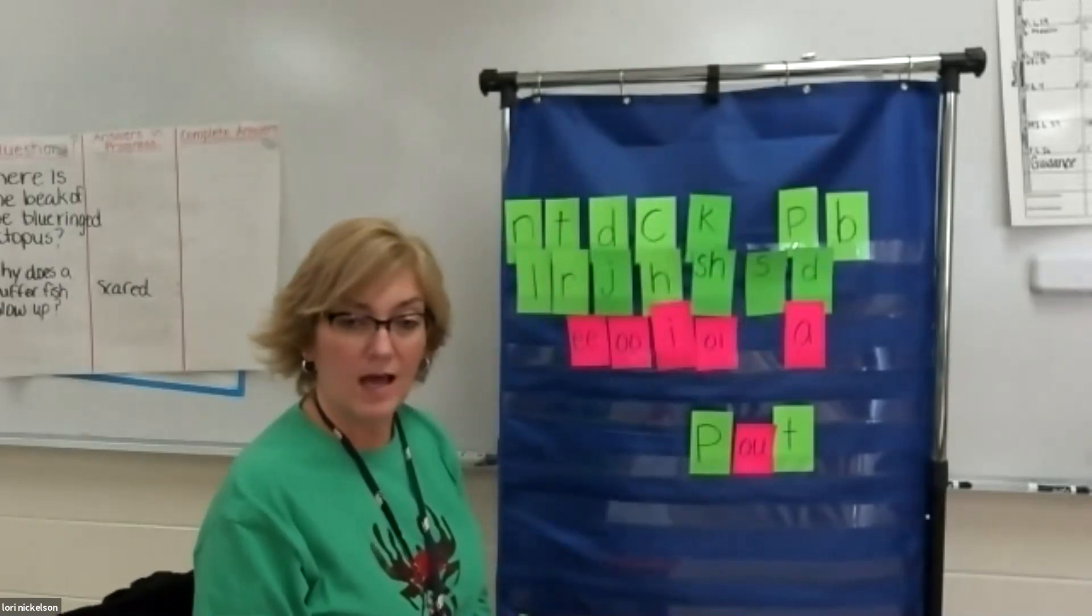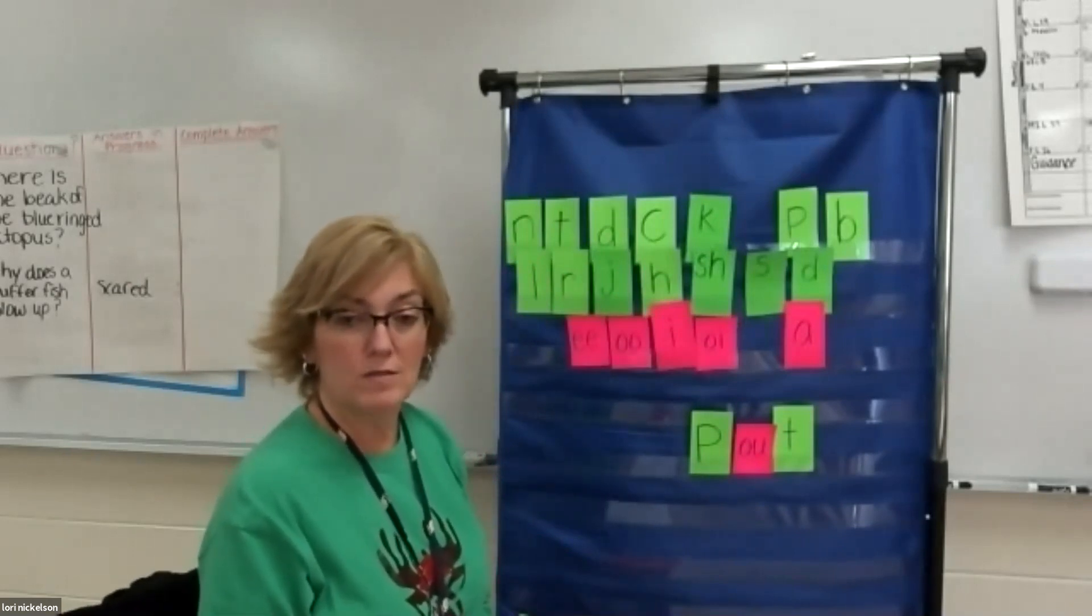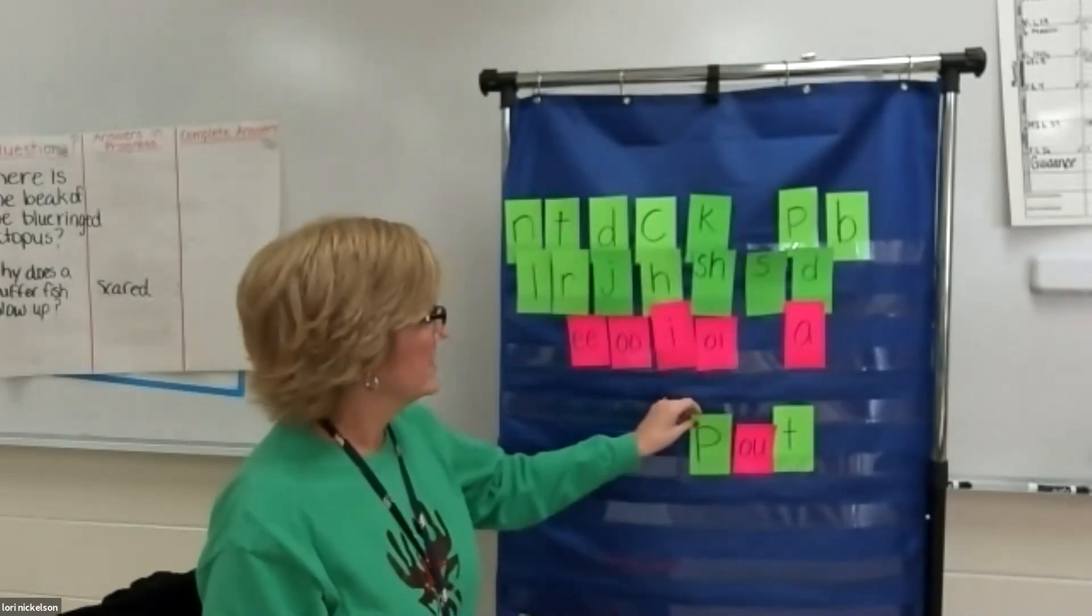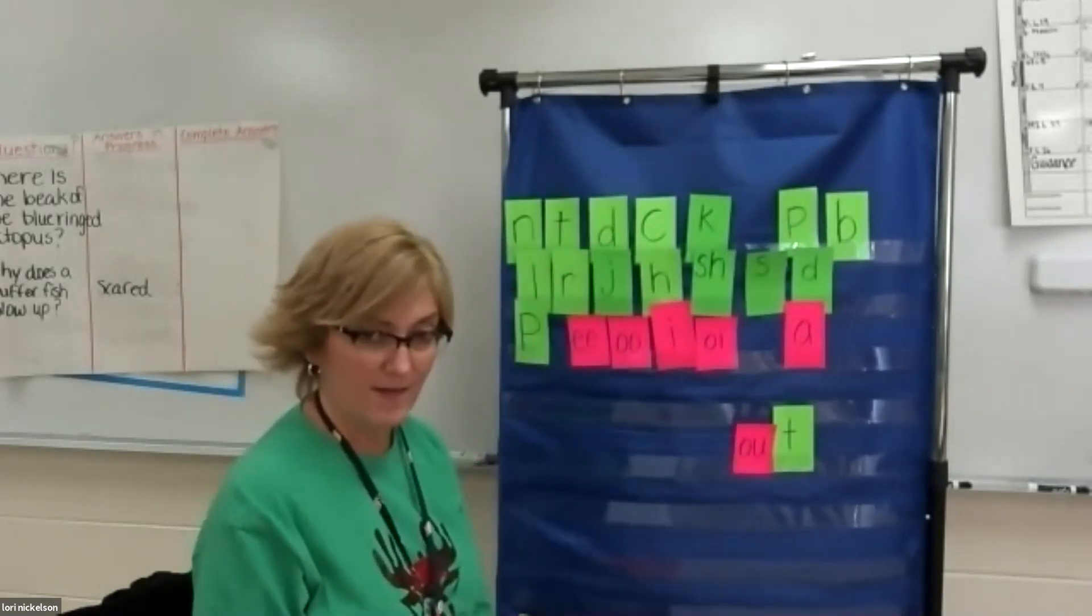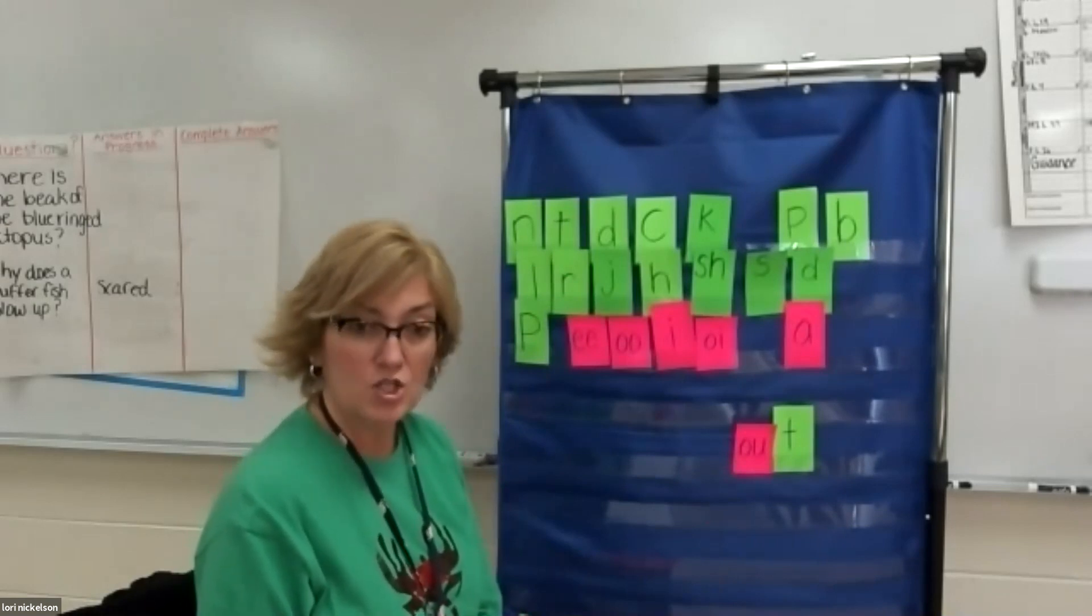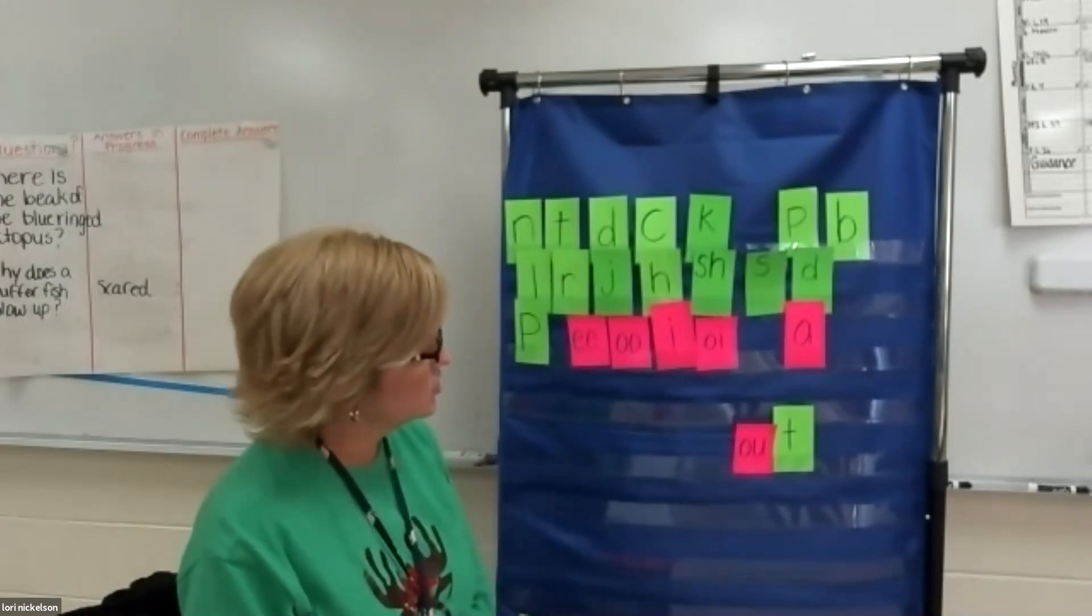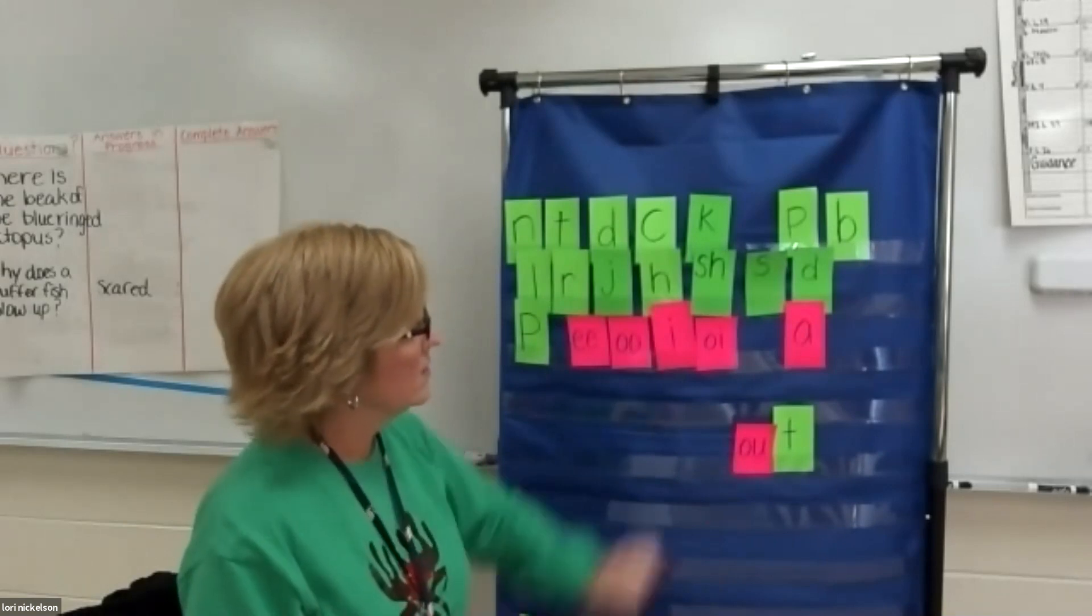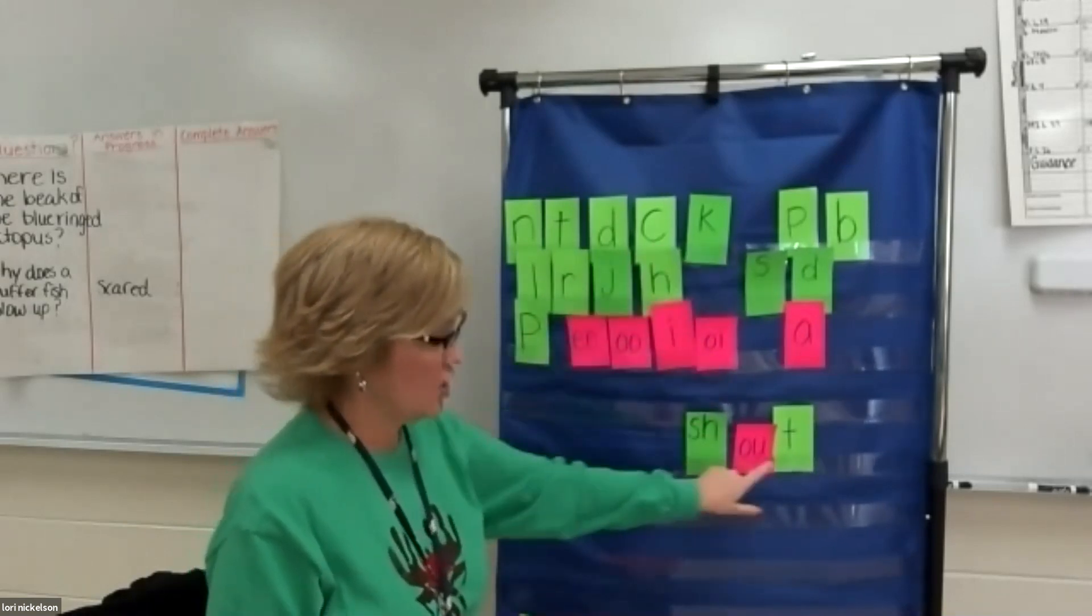So from pout, I want to make the word out. How would I do that? Take off the P, right? Yep. So now I have out. So out, I want to make the word shout. How would I make shout? Add the S-H, right? Shout.